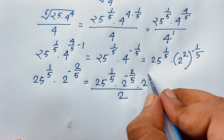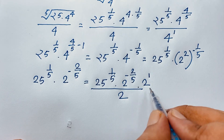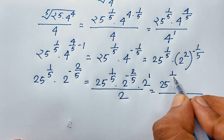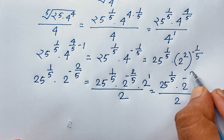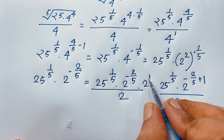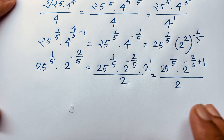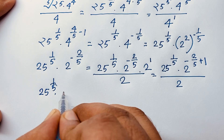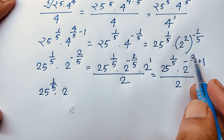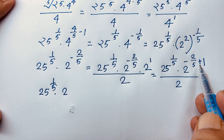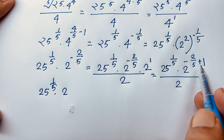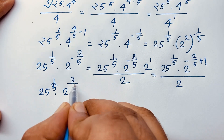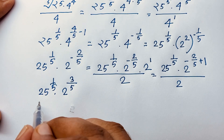Now here, the exponent is 1 and the base is the same, so I add the exponents. It will be 2 times 25 to the power 1 over 5, times 2 to the power minus 2 over 5, plus 1. This is because the base is the same, so it will be 25 to the power 1 over 5, times 2 to the power minus 2 over 5, plus 1 — which is 3 over 5. The least common value is 5: 5 minus 2 gives 3, so it is 3 over 5. This is all divided by 2.